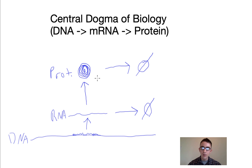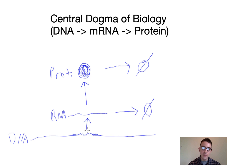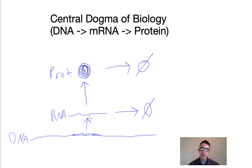The proteins carry out various functions within the cell — they do the work of the cell. This is super important, and if something gets screwed up in this process it can be really disastrous. For example, if a gene is expressed too much, not enough, or with a mutation that corrupts the protein's function, that can lead to cancer or other diseases.